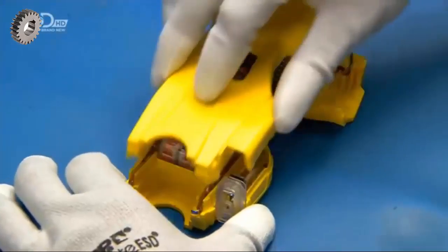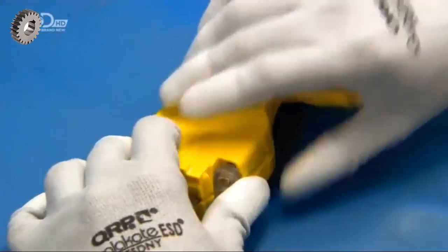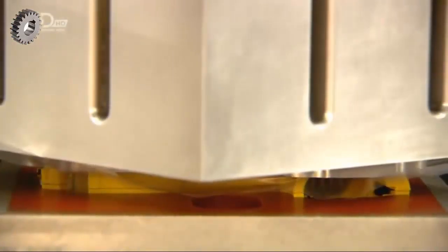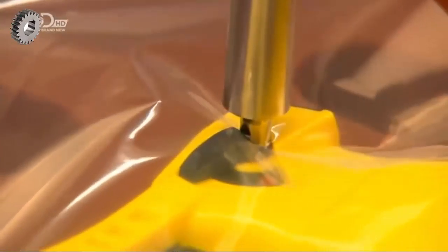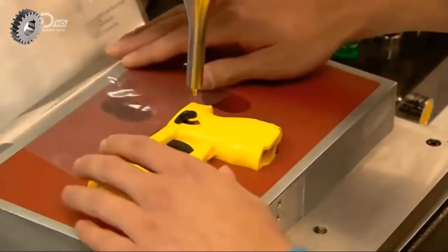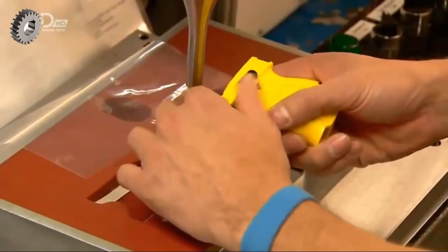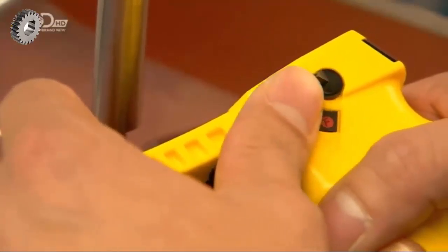He then joins the other half of the taser casing to the one with all the working parts. Then, an ultrasonic welder fuses the casing parts at the tongue and groove seams. Protecting the outer casing with a sheet of plastic, the technician welds a safety switch to the trigger. This critical part will prevent accidental firing.